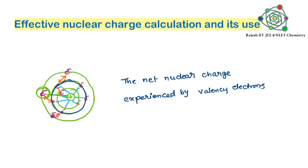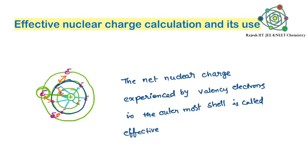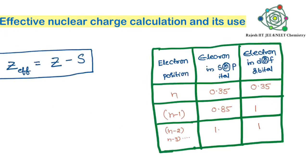That is called effective nuclear charge, and that is what we are going to calculate. Simply we can define it like this: the net nuclear charge experienced by valency electrons in the outermost shell is called effective nuclear charge. The attraction force by the nucleus experienced by the last valency shell electrons is called effective nuclear charge.